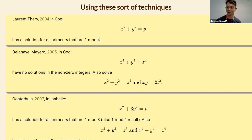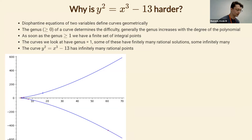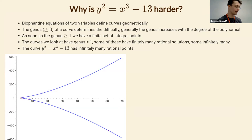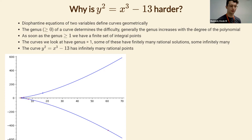I want to explain why y squared equals x cubed minus 13 is suddenly harder. Why wasn't the next step — doing more Diophantine equations — taken in Isabelle or Coq until now? Thinking of Diophantine equations in two variables geometrically, they define curves. You have two variables, one equation, and you're looking for which points on the curve have integer coordinates. The genus is the important number.